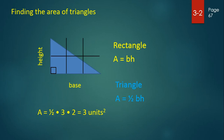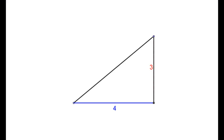If we look at the area of this triangle, its base measures three units and its height measures two units, so the area is one-half times the base times the height. Now take a look at this triangle — it has a base of four units and a height of three units. It's important to notice that the base and the height are always at right angles to each other — they're always perpendicular. So the area of this triangle would be one-half times four times three, or six square units.